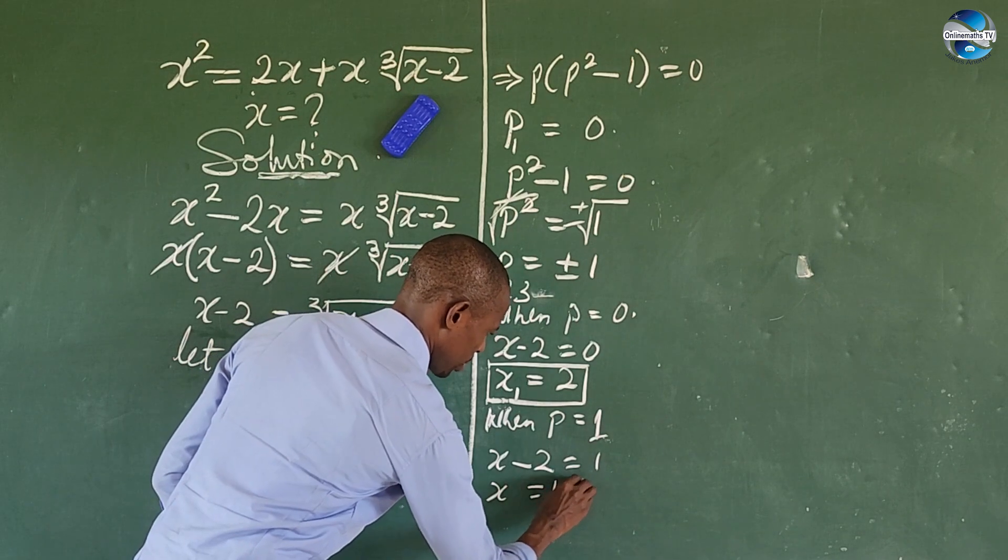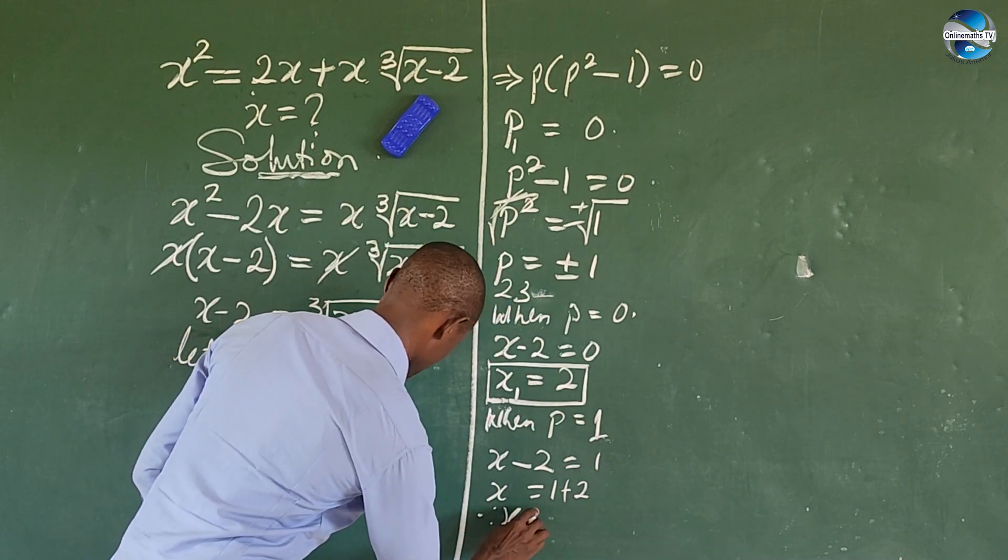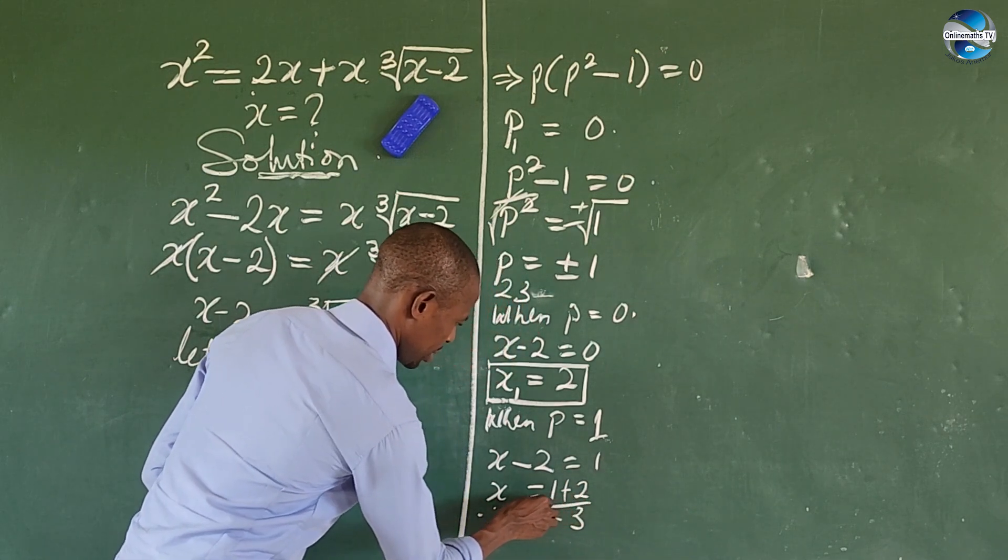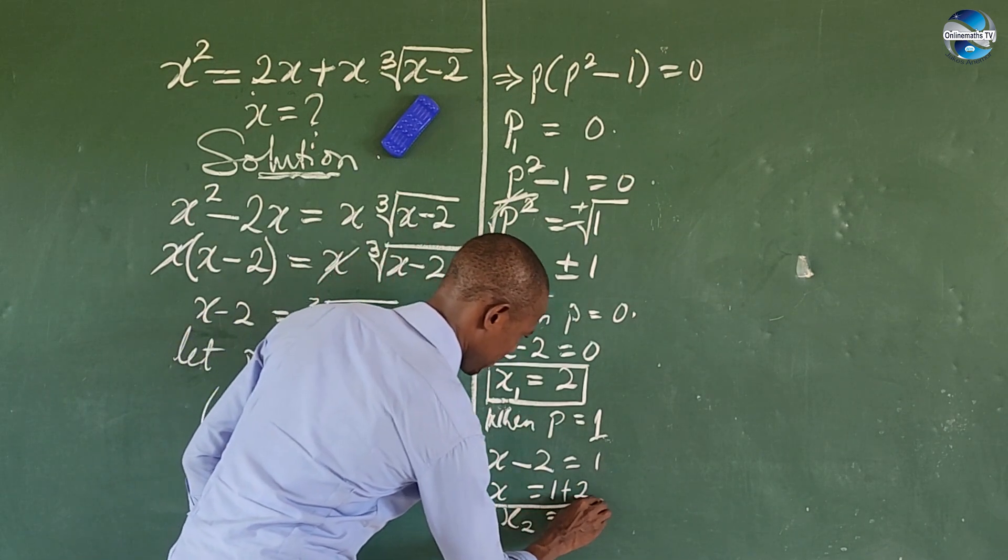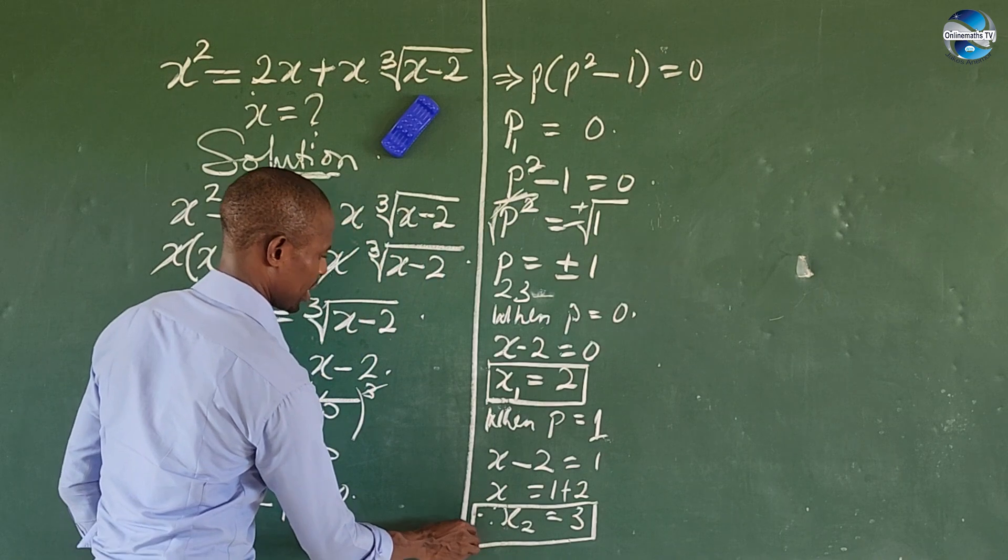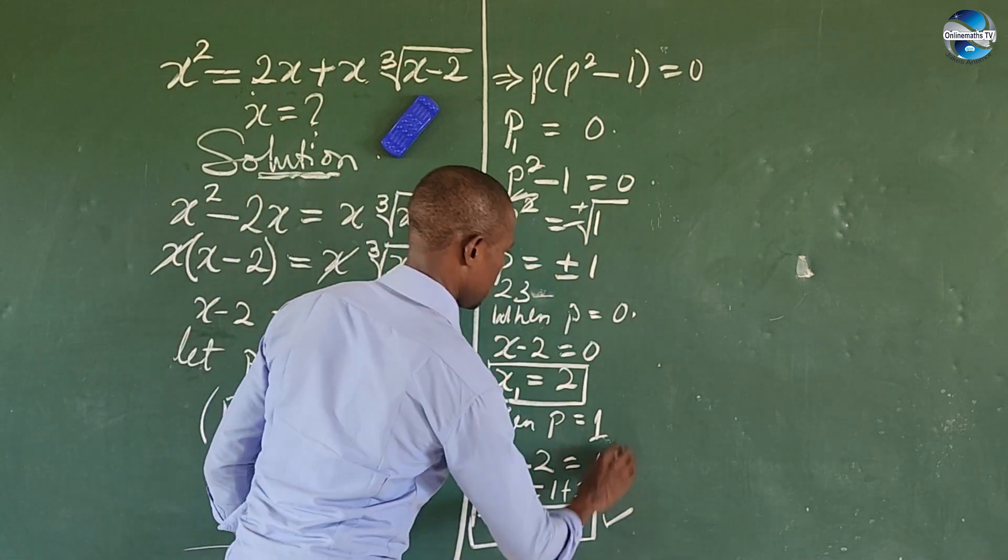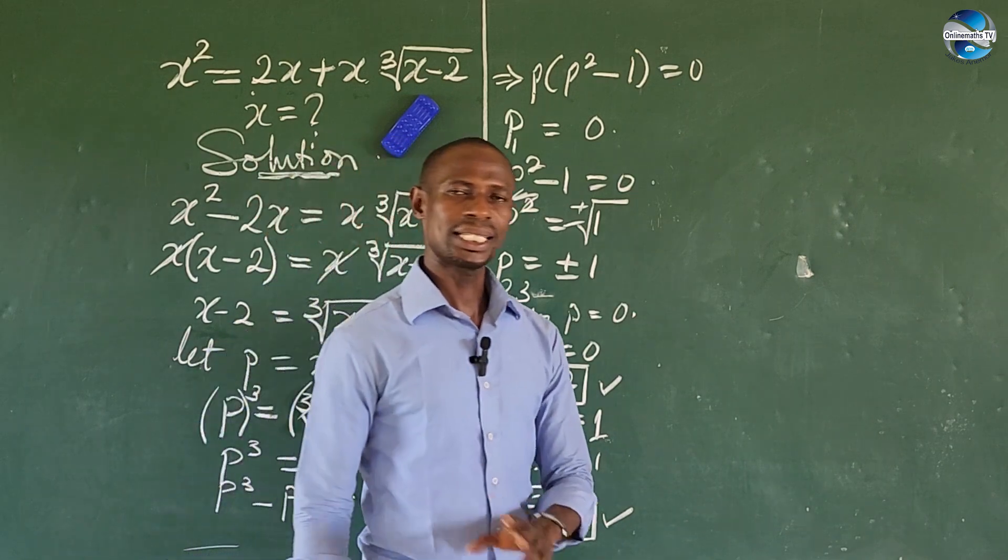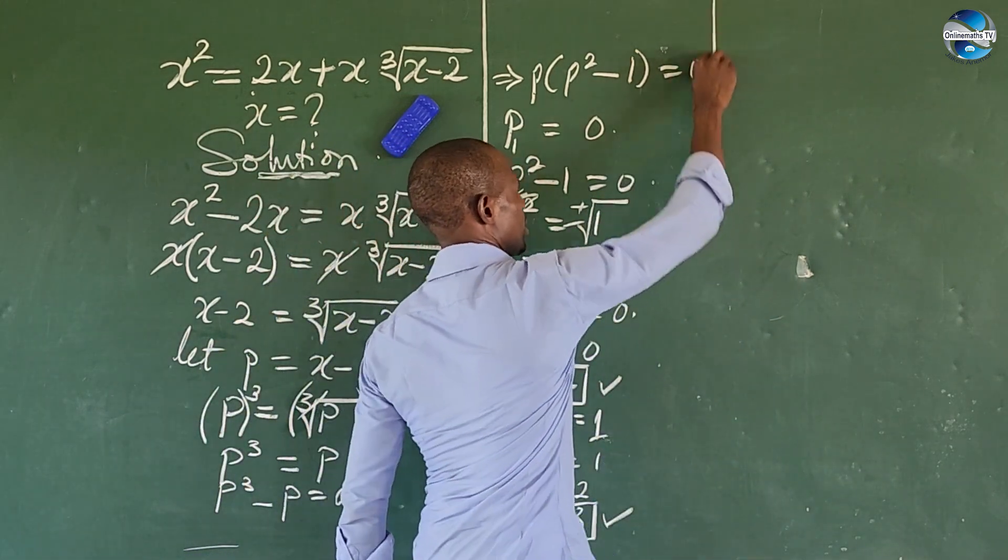Move this to this side, so we have x equals 1 plus 2. Therefore, our x₂ equals 3. So we solved for another value of x already.